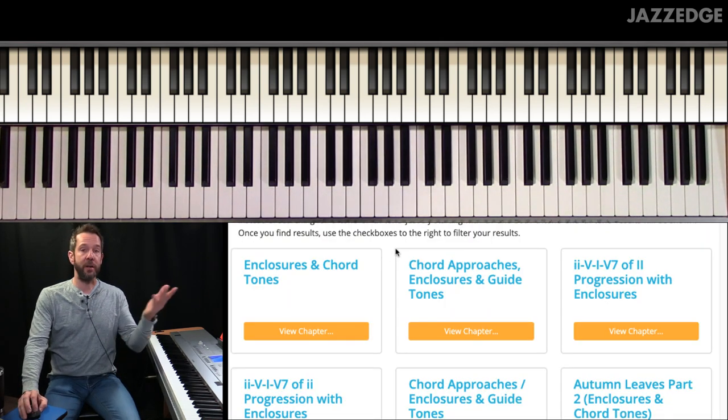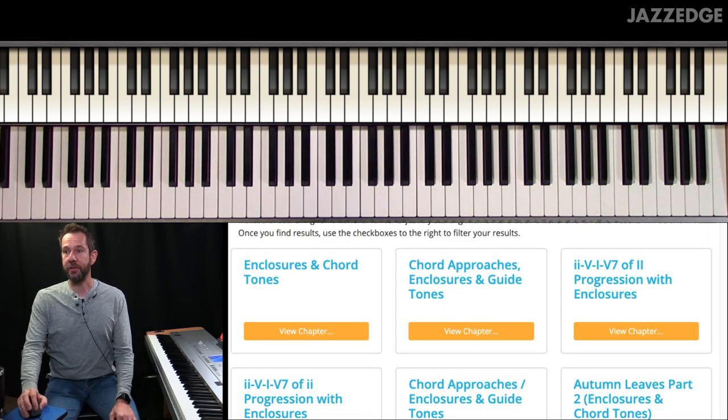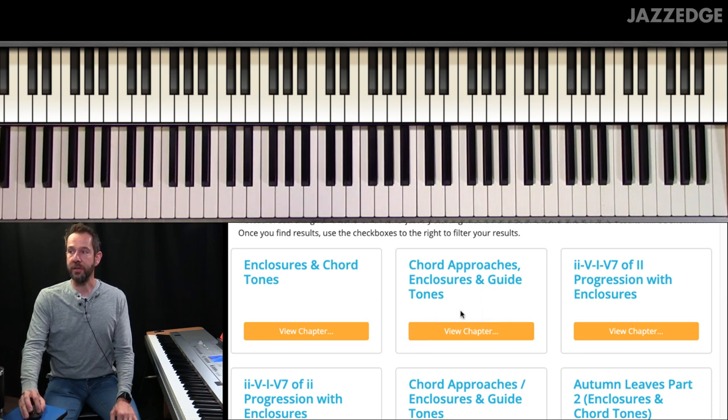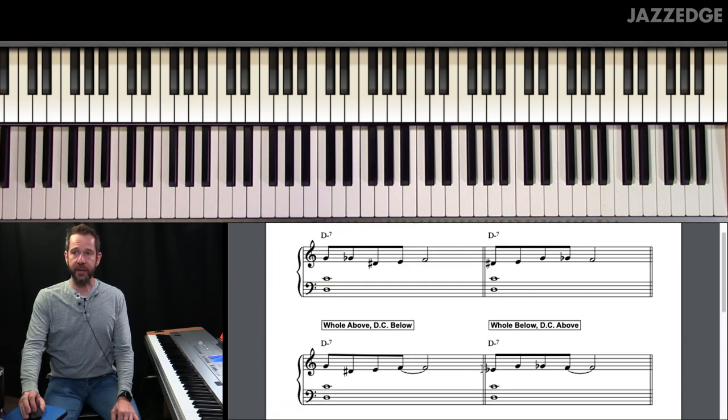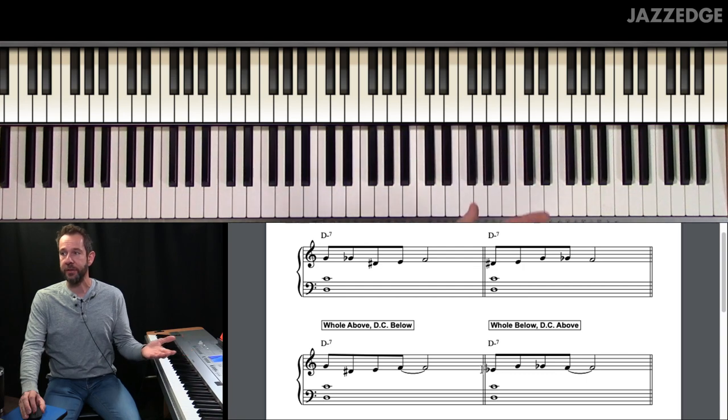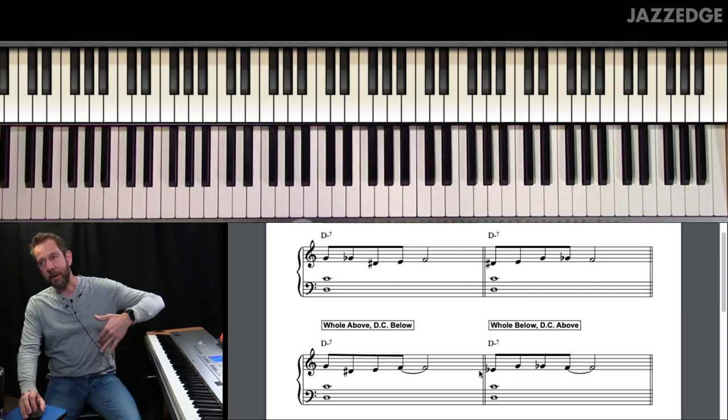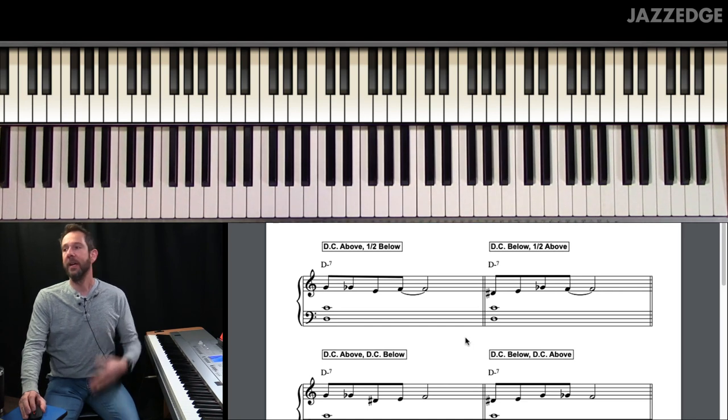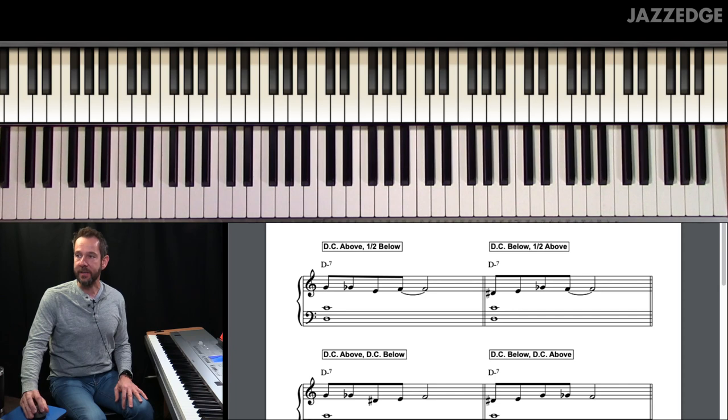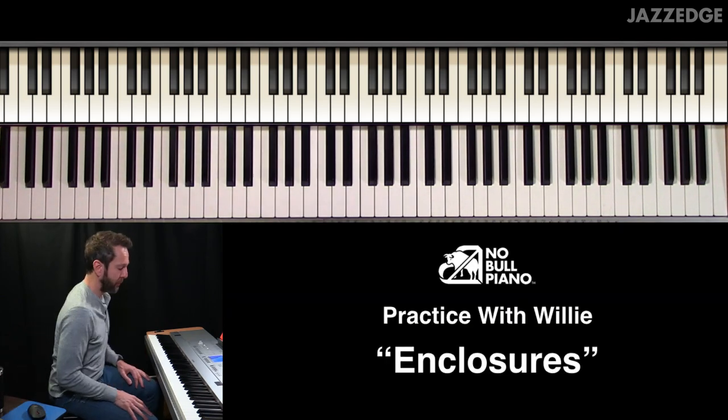So I just did a search on my Jazz Edge website for enclosures. I can go to my chord approaches, enclosures, and guide tones lesson, and I get this music talking about all of these different enclosures. So whole above, double chromatic from below, double chromatic from above, and all of that. So let's talk about what that means and what these enclosures are all about.